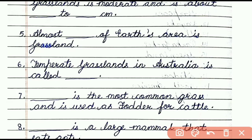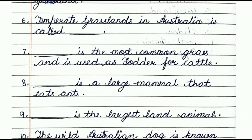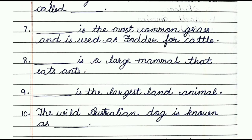Question number seven: dash is the most common grass and is used as fodder for cattle. The answer is alfalfa. Question number eight: dash is a large mammal that eats ants. The answer is aardvark. Question number nine: dash is the largest land animal. The answer is African elephant.